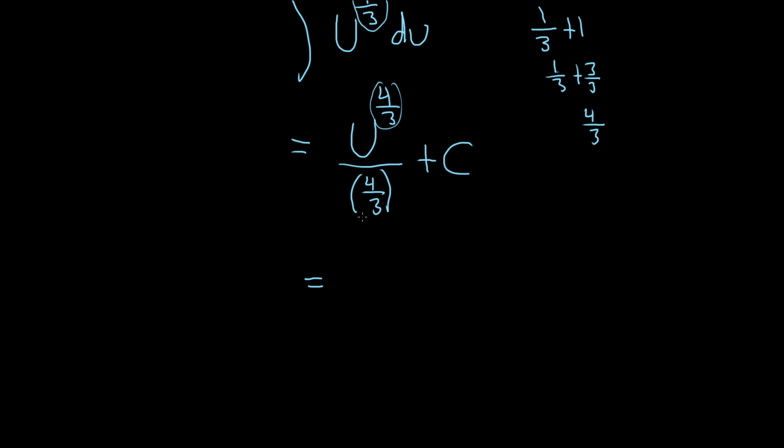So we're dividing by 4 thirds. So we're really multiplying by 3 fourths. So we have 3 fourths, u to the 4 thirds, plus our capital C.